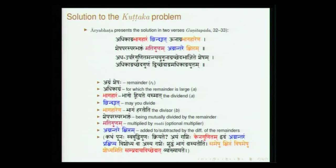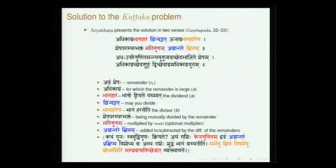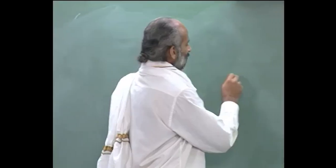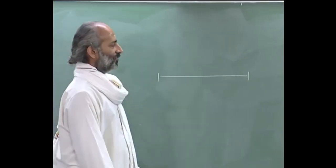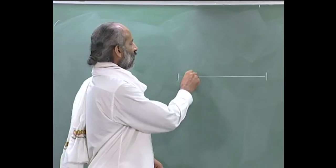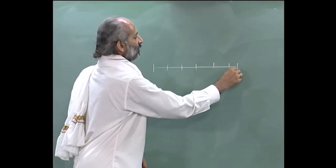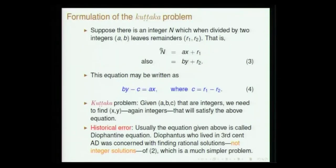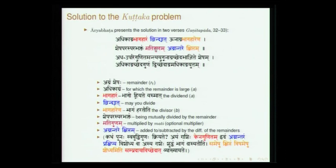Ajikagra bhagaharam chindyat unagra bhagaharen — this is the first half of the algorithm given by Aryabhata. The term agra normally means tip, but here it is used in the sense of a remainder. So if n equals ax plus r1 and by plus r2, then r1 and r2 are referred to as agras. If r1 is greater than r2, you call r1 adhikagra and r2 unagra. Chindyat means may you divide — chedhanam is cutting, referring to the process of division.